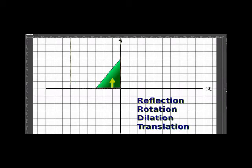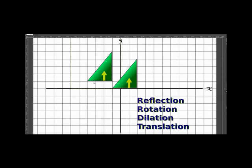Our last one is translation. Translation means that we move it. It's not going to flip around, reflect, rotate, or dilate. It's just going to move. For example, here we've moved over 1, 2, 3 and we've moved down 1. This is what's called a translation — our translation moved over and it moved down.